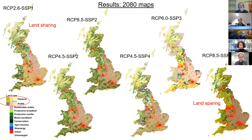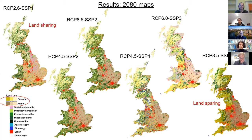In a way, these different examples span a range between a land sharing and land sparing type of land system — not entirely intentionally in the scenario narrative. SSP1 is a good case for land sharing, because we have strong demands for various ecosystem services and sustainable production, and what we end up with in the model are very large, extensive areas of multifunctional land uses producing a wide range of ecosystem services. SSP5, on the other hand, is a good example of land sparing because very intensive production-focused agriculture means areas of the UK can be left almost accidentally to more natural land covers.